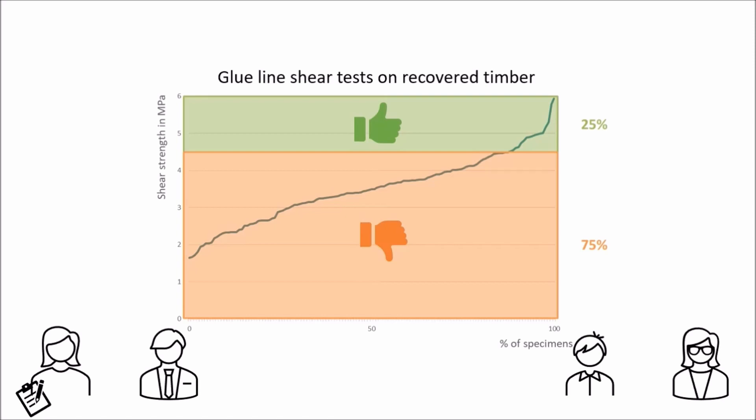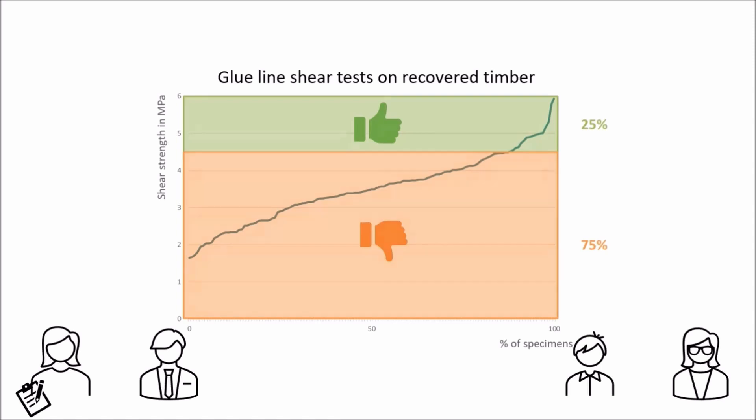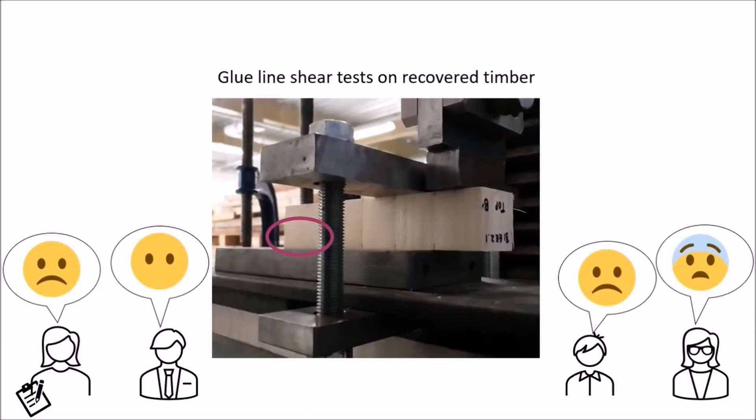But in the plot twist of the century our nerds find a paper published by a bunch of other nerds 12 years prior. The paper basically says that the test method for the shear tests is super dependent on the test setup and the person performing the tests. But apparently nobody bothered looking into it and more than a decade later we are still using the same method.